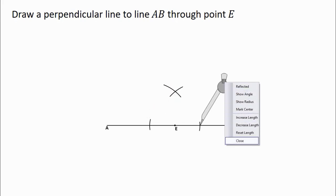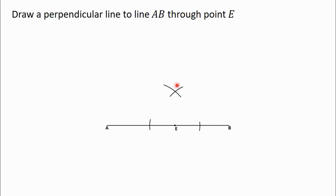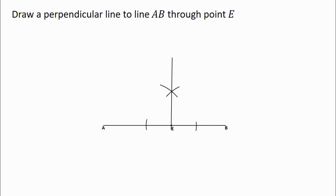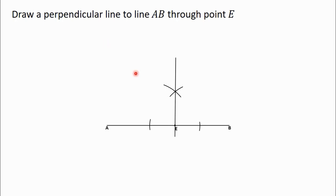We are now done with the compass. We have the point of intersection between the two arcs and point E. Draw a straight line joining these two points using a ruler and pencil. This straight line is perpendicular to line AB and passes through point E. This is how to draw a perpendicular line to another line through a point on the line.